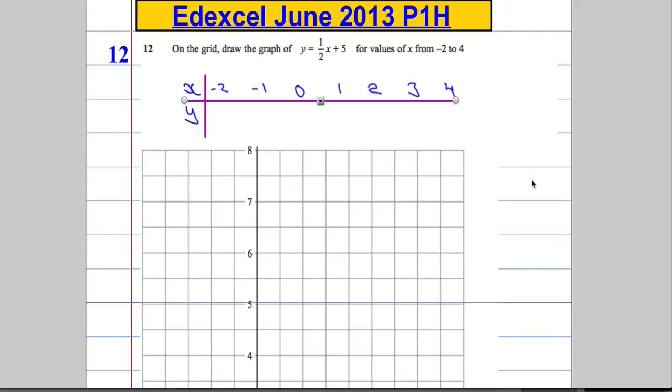And a nice thing to do when you've got a question like this, if you've got to fill in your table, is start with the easiest one. What's the easiest number to substitute in? Often it's 0. A half times 0 is 0, and 0 plus 5 is going to give us 5. So that's what y is going to be when x is 0.